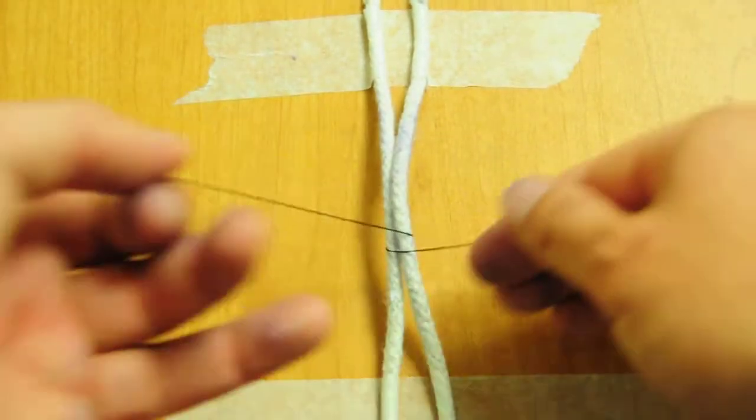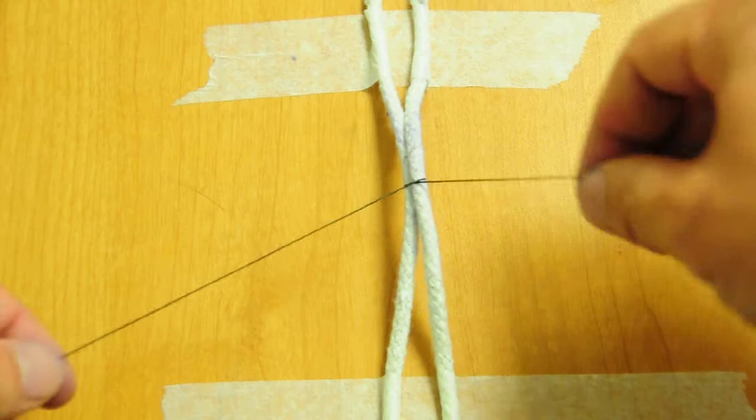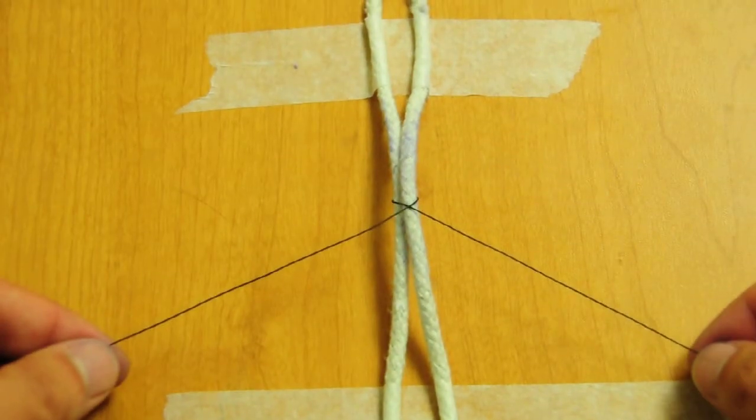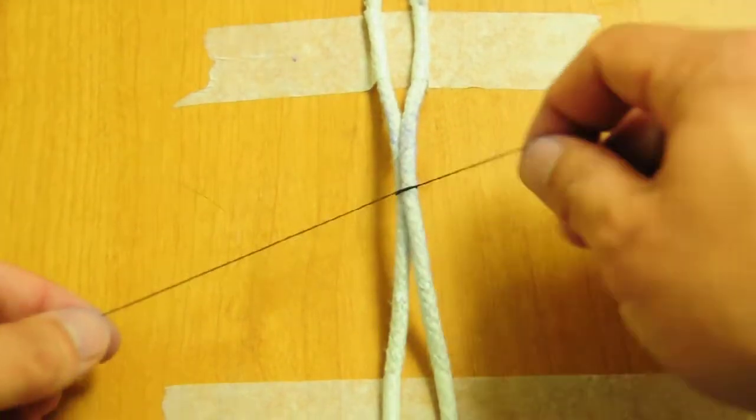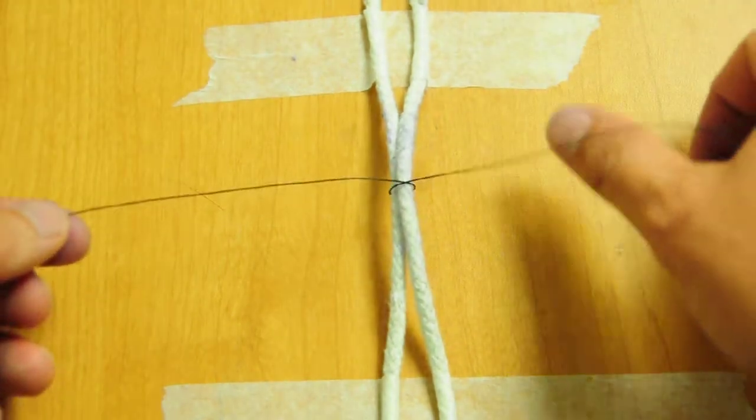So say you're doing your two-handed ties. This is where the importance of the surgeon's knot comes down. It helps cinch down your first knot. So we're going to take it here.